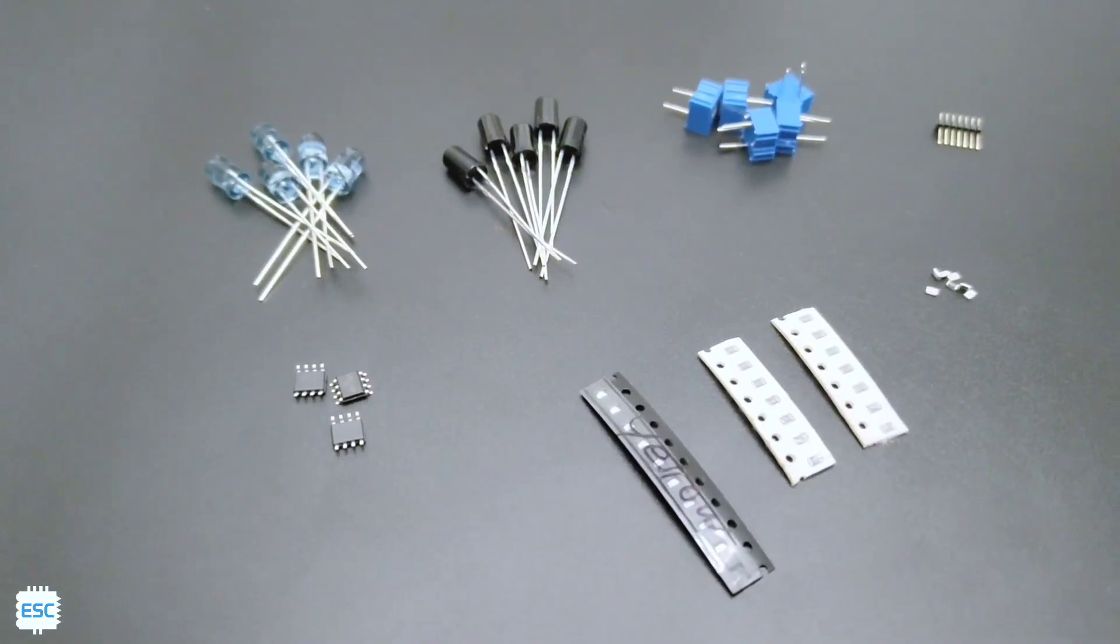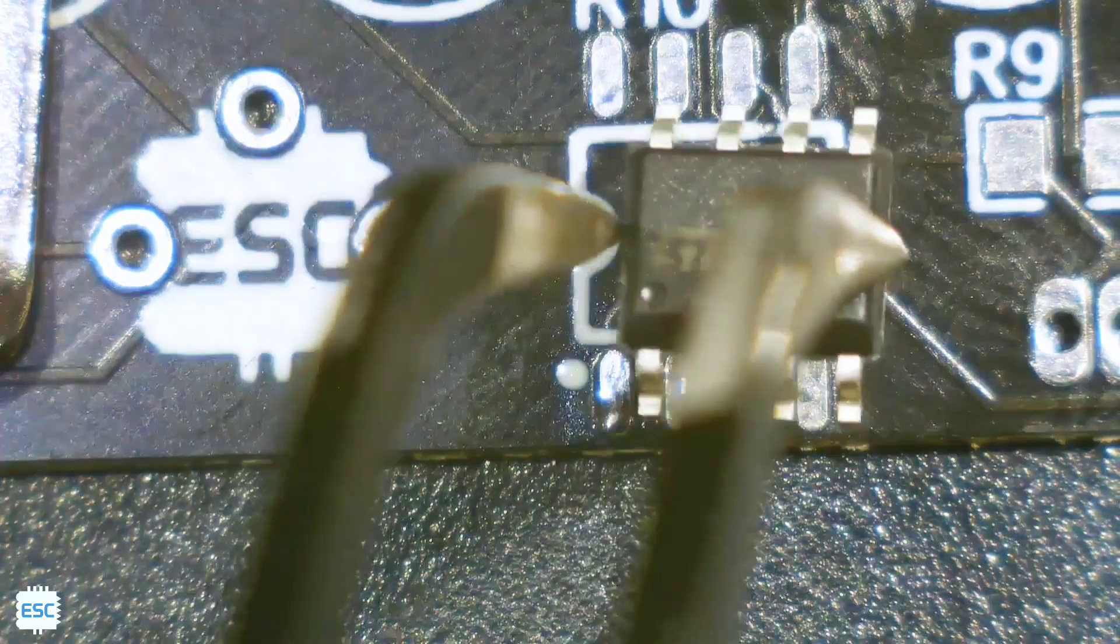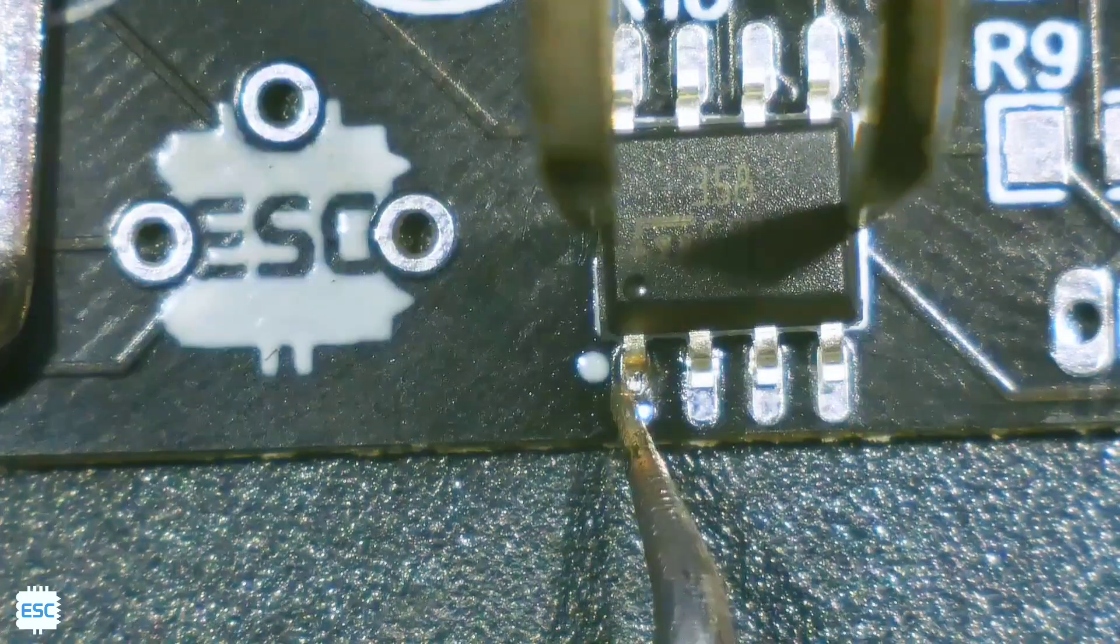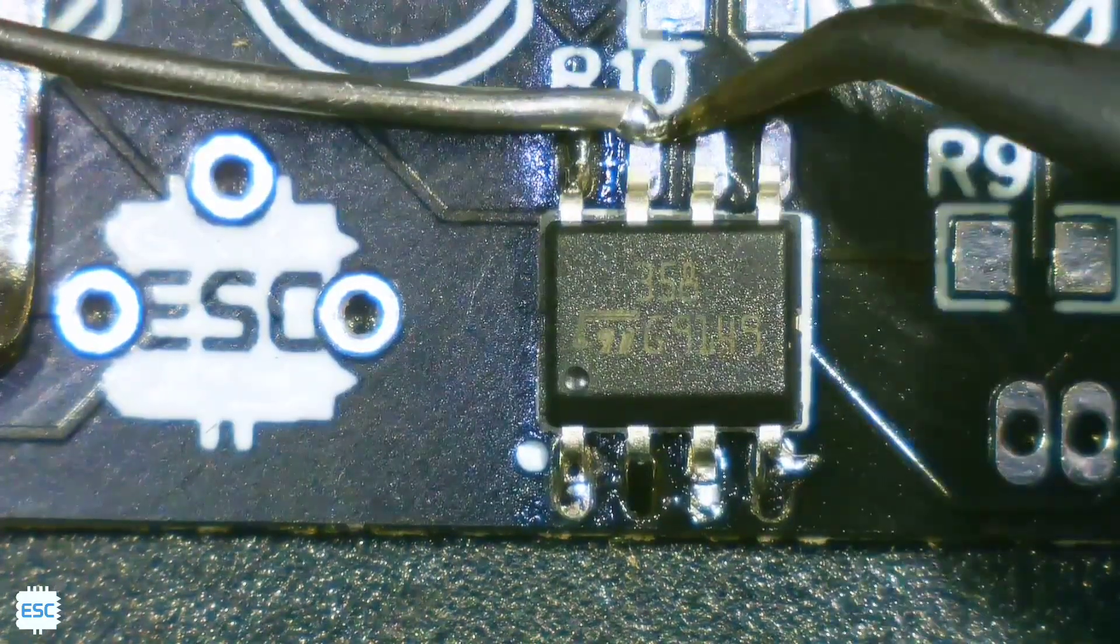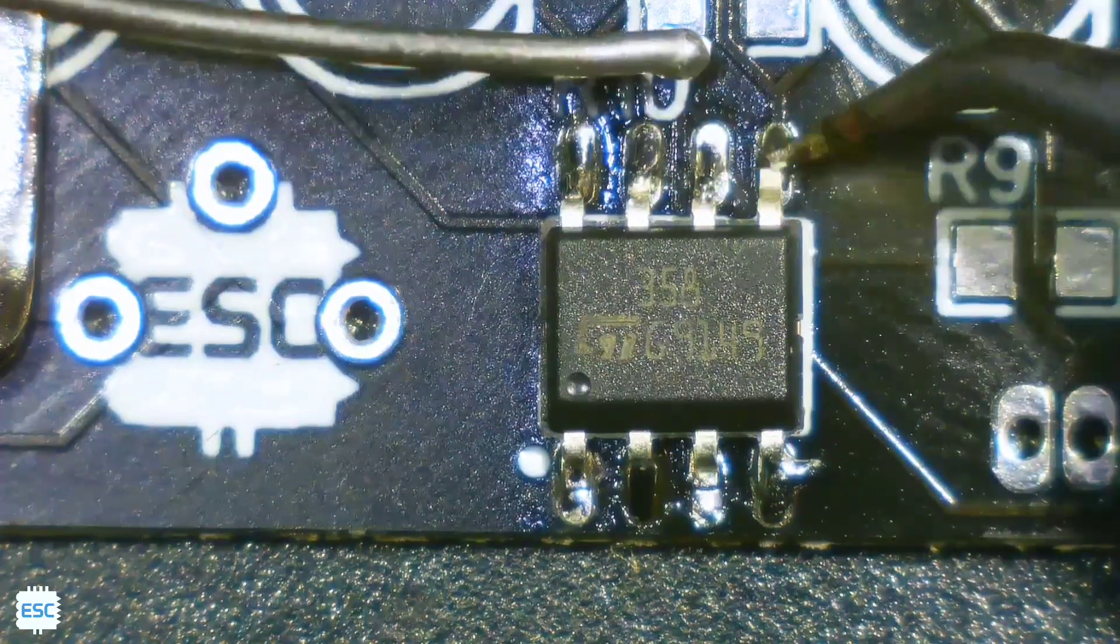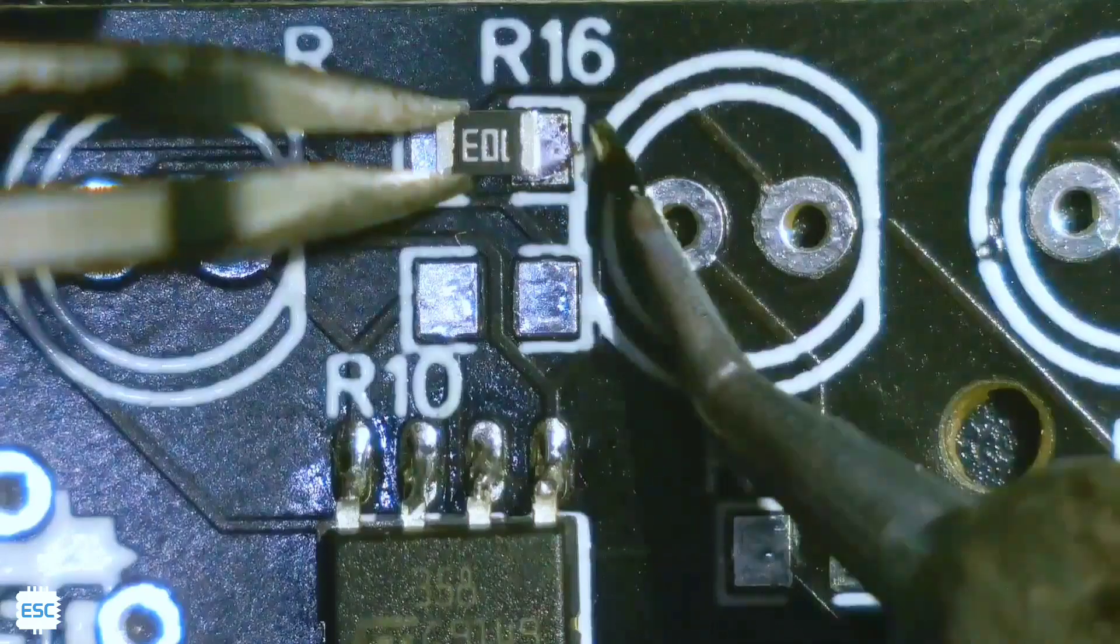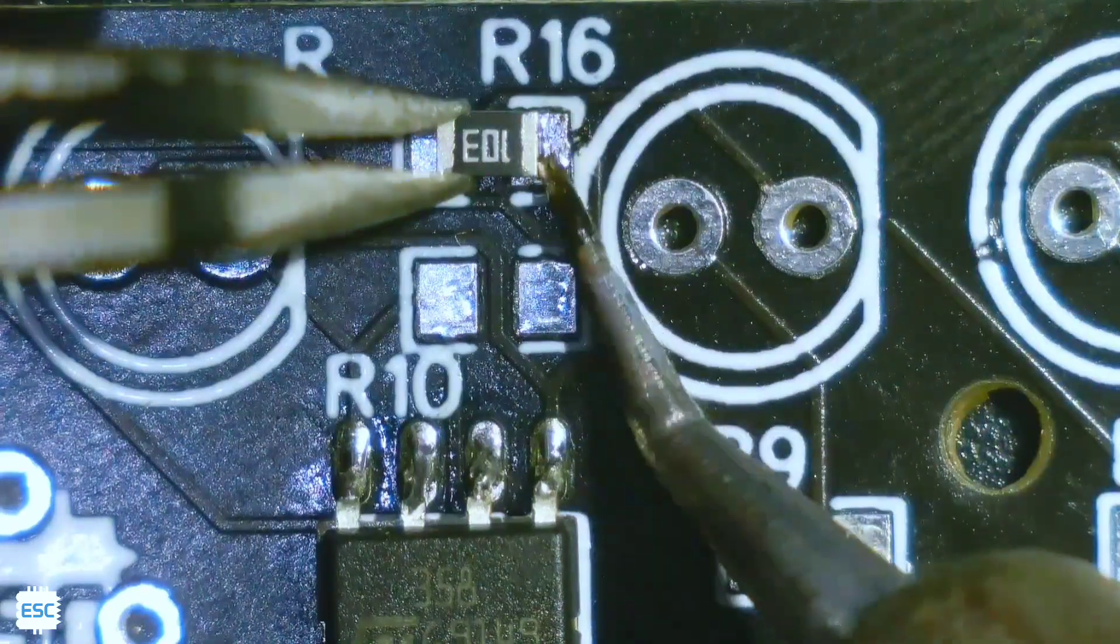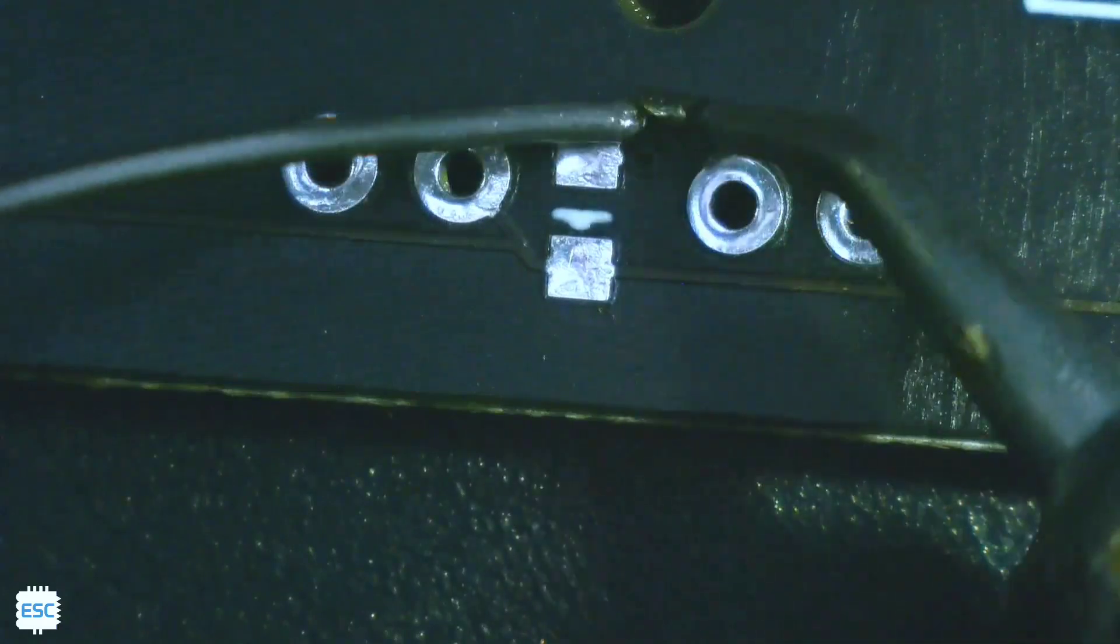Now let's grab all components and start soldering. I started with the SMD ICs, then I soldered the resistors, and finally I soldered the LEDs.